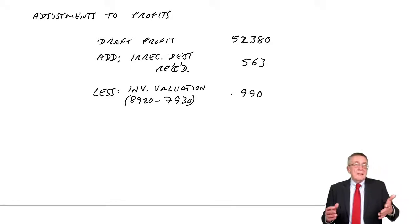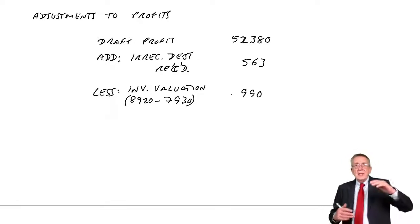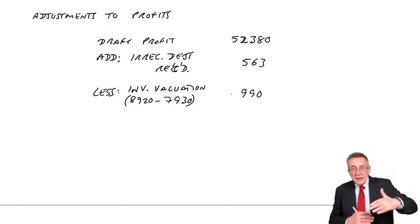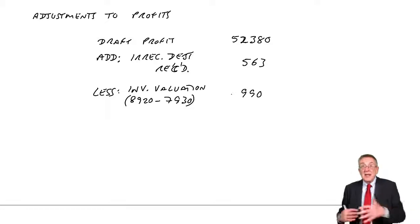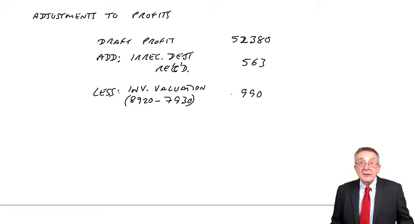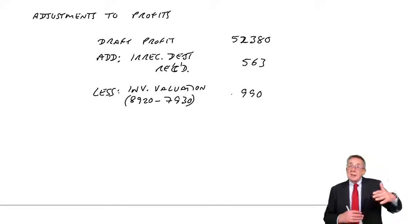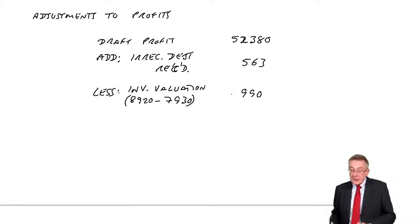Or, to speak quickly, remember, to get the cost of sales we subtract the closing inventory. So at the moment we've been subtracting $8,920 to get cost of sales. If we subtract a lower figure, we should be subtracting $7,930. Subtract a lower figure, we'll end up with a bigger cost of sales, and a bigger cost of sales means lower profit.